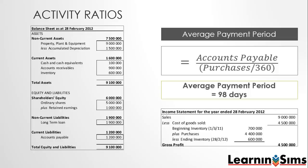This means that it takes the company on average 98 days to pay its creditors. This ratio is useful when compared to the average collection period and the payment terms extended to us by our creditors. Ideally, we want to pay creditors as late as possible without affecting their relationship negatively.